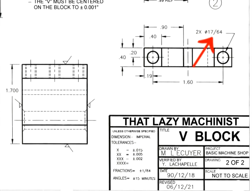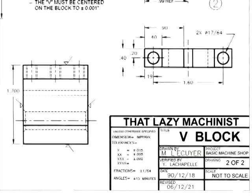As for this 1/64th fractional dimension on the hole, it has a tolerance of plus or minus 1/64 because it's a fractional dimension. That means the hole is acceptable anywhere between 8/32nds and 9/32nds of an inch.